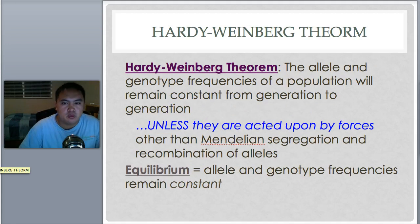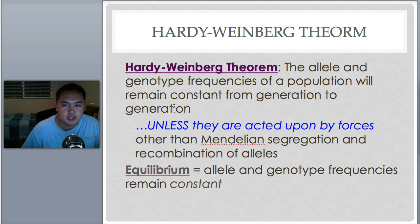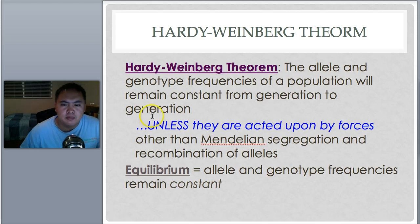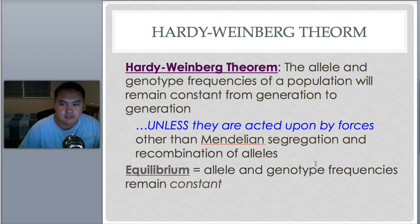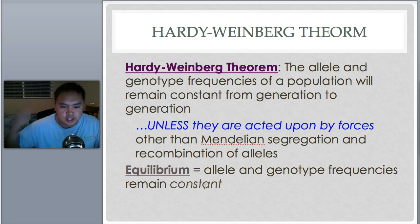To understand this, we use the Hardy-Weinberg theorem, which is the majority of this bio standard. It states that the allele and genotype frequencies of a population will remain constant from generation to generation — for example, the frequency of black hair in a given population — unless acted upon by forces other than Mendelian segregation and recombination. So the normal course of genetics will repeat the same frequency every generation, maintaining equilibrium.